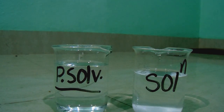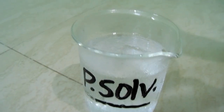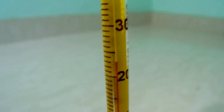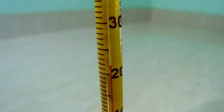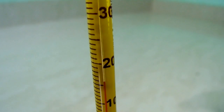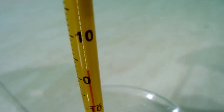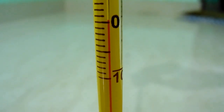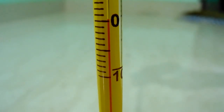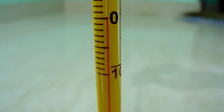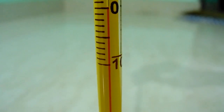Let us now start with the pure solvent. Here is the thermometer. The room temperature is 24°C. Now as we dip it into the pure solvent, see how the temperature is going down — 5°C, 4°C, 3°C — and now it is approaching and reaching exactly 0°C.